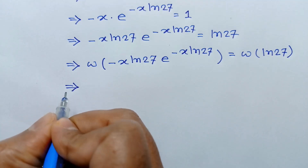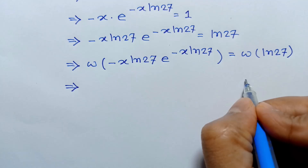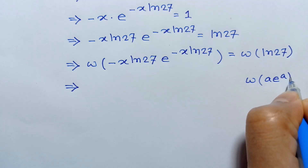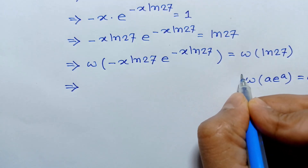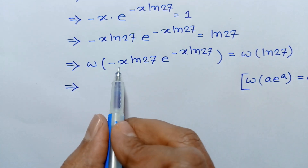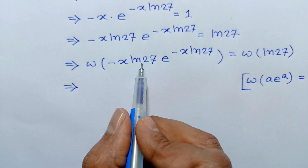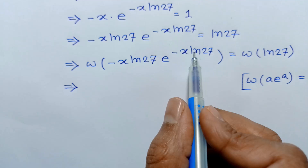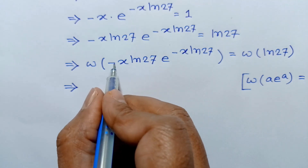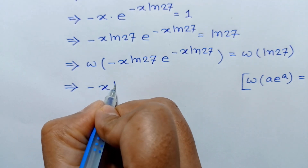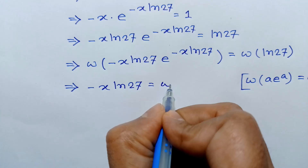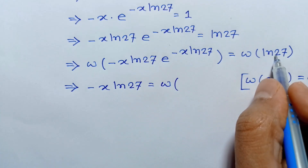Now according to the Lambert W function identity, W of a times e to the power a equals a. Applying this formula, where a is negative x ln of 27, the left side simplifies to a. So negative x ln of 27 is equal to W of ln of 27.